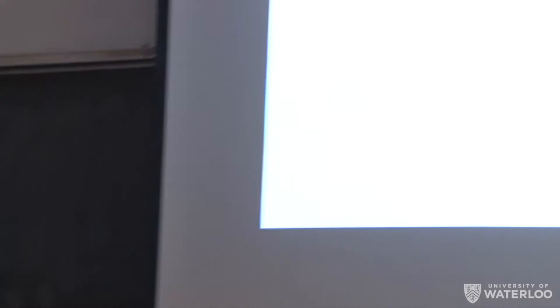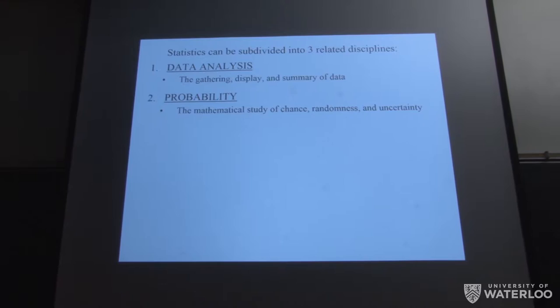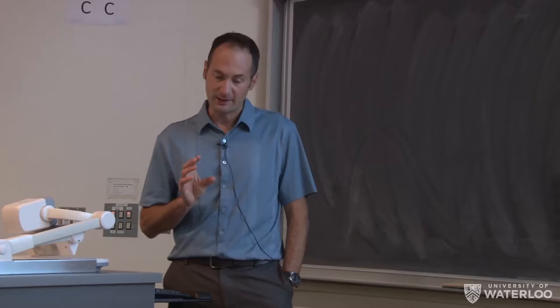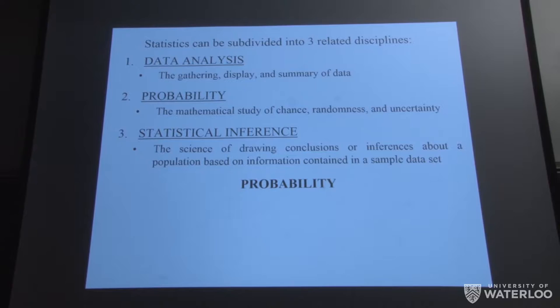So very briefly, if we take the field of statistics and we break it up into three main sort of categorizations, we could talk about data analysis, which is obviously pretty self-explanatory. It's a gathering, display, and summary of data. Something that's more closer to my heart is the theory of probability, which simply put is this mathematical study of chance, randomness, and uncertainty, those being the key words. And then sort of a combination of one and two is the idea of statistical inference where you use data and the mathematical theory so that you can make conclusions based on data you've taken from a certain population.